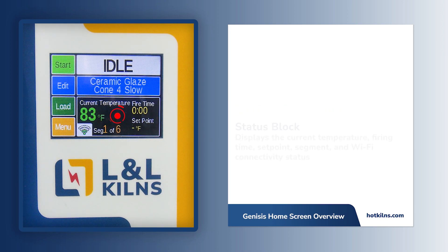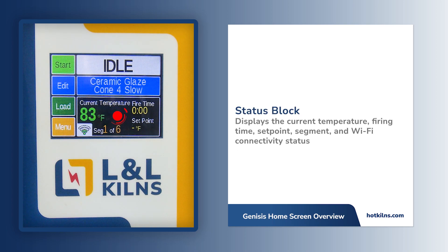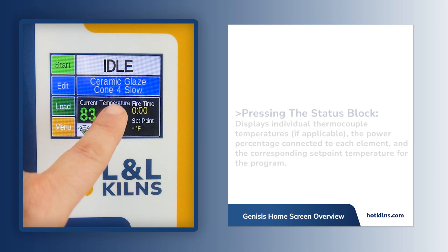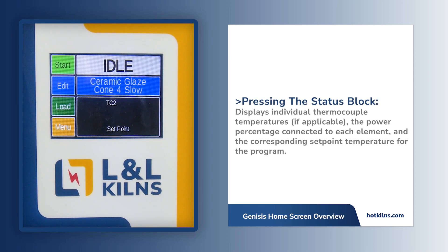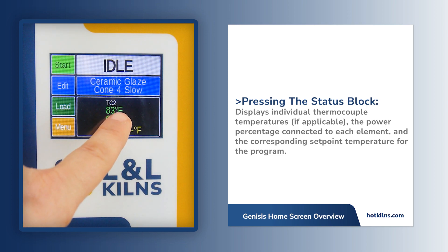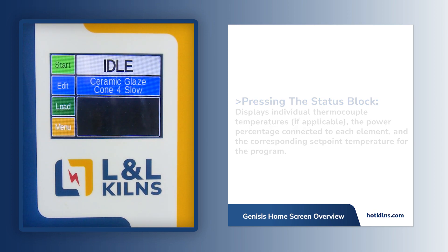The status block at the bottom offers a range of information regarding the kiln status. It includes the current temperature, firing time, set point, segment, and Wi-Fi connectivity status. Tapping on this block will switch to another screen displaying individual thermocouple temperatures, the power percentage connected to each zone, and the corresponding set point temperature for the program.